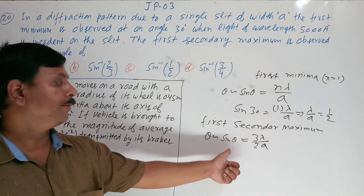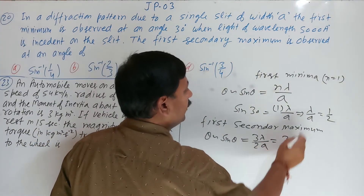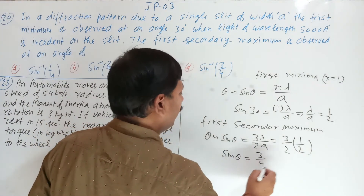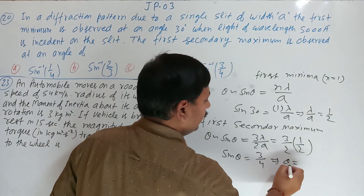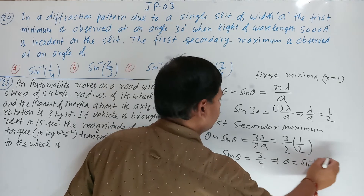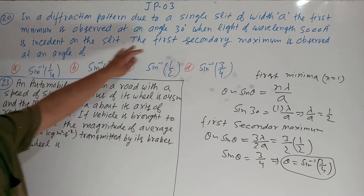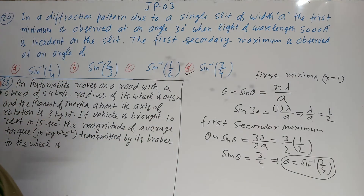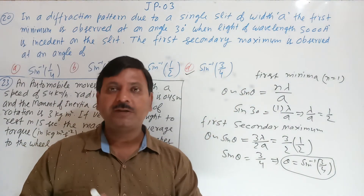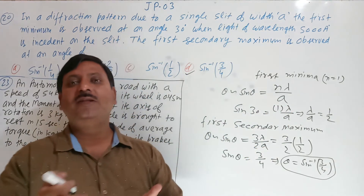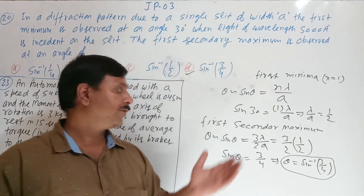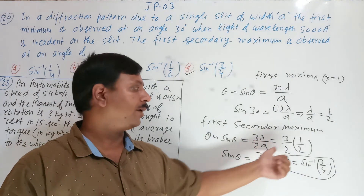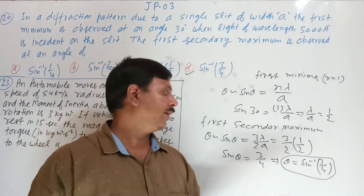So for the first secondary maxima: sin(theta) equals 3·lambda / (2A) equals (3/2) times (1/2) equals 3/4. Therefore theta equals sin⁻¹(3/4). Option D is correct. Remember: for nth minima the formula is n·lambda / A, and for secondary maxima it is (2n+1)/2 times lambda / A. For n equals 1, that gives 3·lambda / (2A).